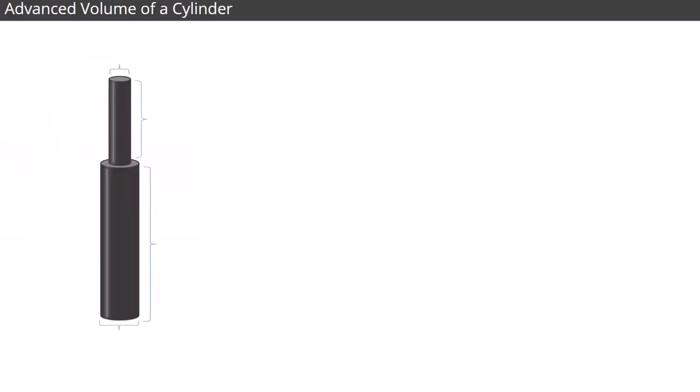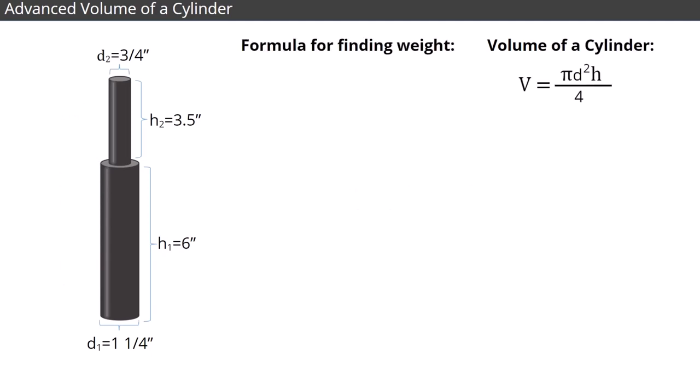Now, let's look at a more advanced problem. It's also one you may encounter in the real world. We need to find the weight of this steel shaft, but we first need to know its volume. The formula for finding weight is volume times density.